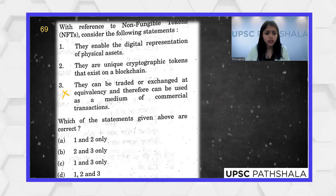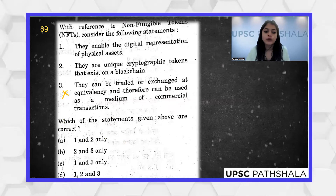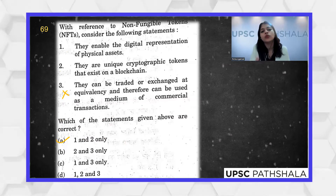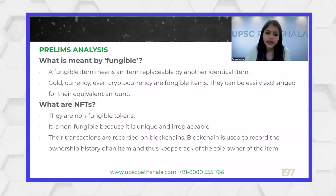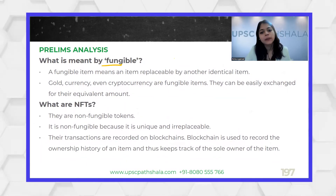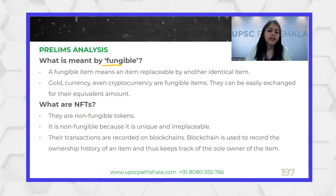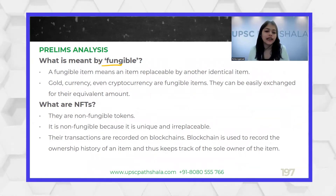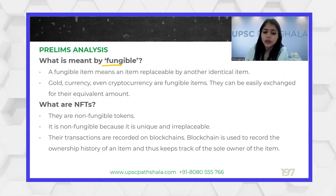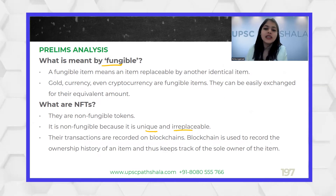The only option which does not have statement three is option A. Without even bothering about statements one and two, statement three itself gives us the clue. A fungible item means an item that can be replaced by another identical item — things like currency, gold, even cryptocurrency. But non-fungible tokens are unique because they cannot be replaced; they are non-fungible and irreplaceable.